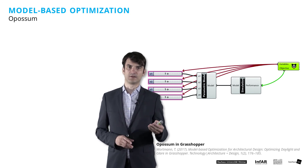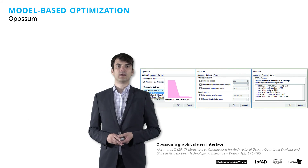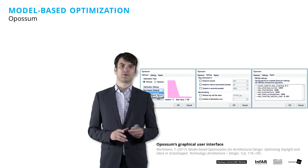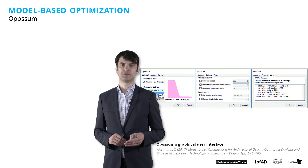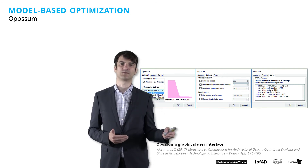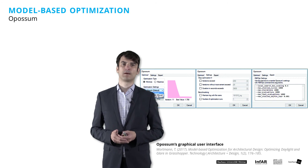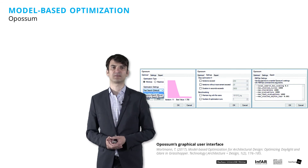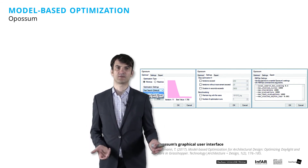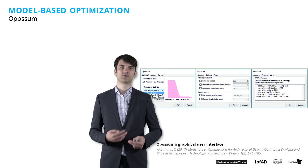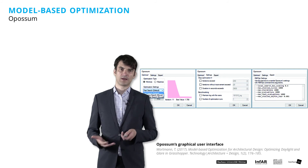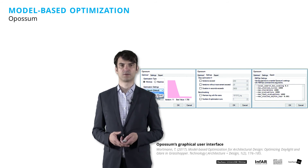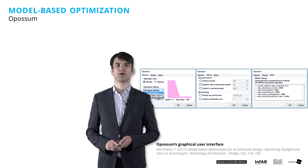Opossum offers a graphical user interface that reduces the complexity of the model-based optimization algorithm, organizing it into three tabs with increasing levels of control. It contains presets based on intensive testing by Thomas Wortmann with mathematical test functions, so you can use them to start with this model-based approach. Eventually you may need to adjust a few parameters if results are not satisfying, but for the beginning it's absolutely fine to use these presets.